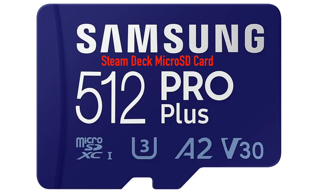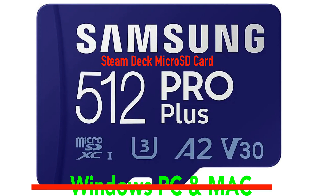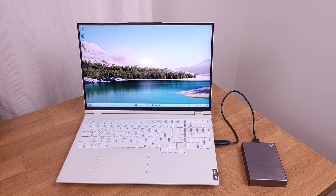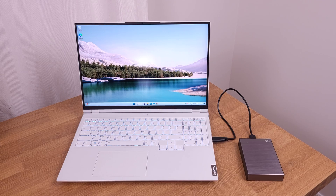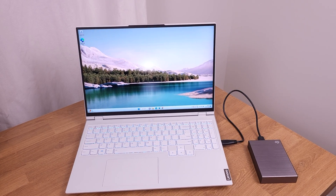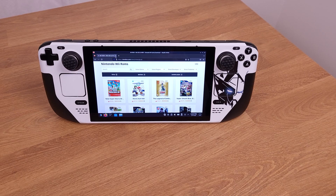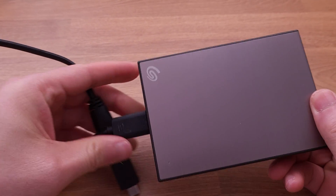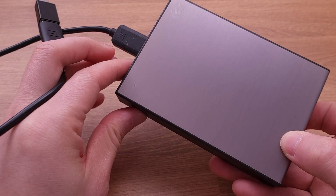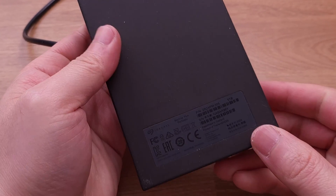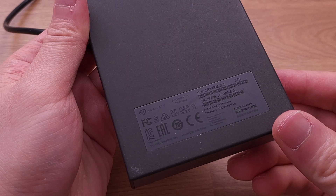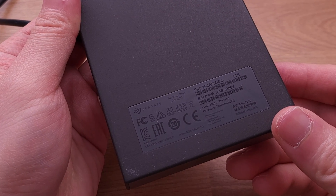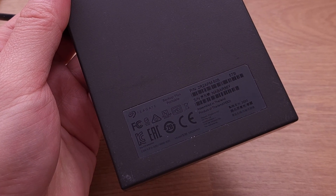Before we begin this part, just keep in mind that the Steam Deck SD card cannot be read on a Windows PC or a Mac. You can either download the games from your PC and then copy them into the Steam Deck, or you can use your Steam Deck to download the games directly. I used a 5TB external hard drive to transfer all my game ROMs from my PC to my Steam Deck. I have had this hard drive for almost 5 years and it has never failed me.